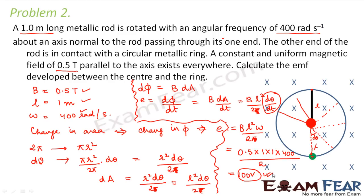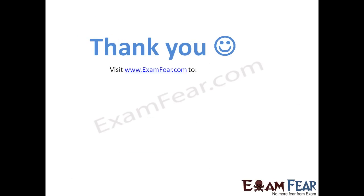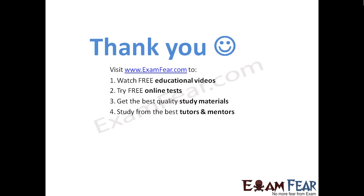In many textbooks the approach followed is not quite correct. When talking about electromagnetic induction, you should always look at the change in flux and what is causing it. In this case, the change in area is causing the change in flux. We calculated the change in area in terms of dθ — the angular displacement of the rod moving in circular motion — and used that to calculate the EMF developed between the center and the ring. Please visit examfear.com to watch free educational videos, try free online tests, get the best quality study materials, and study from the best tutors and mentors. Thank you.